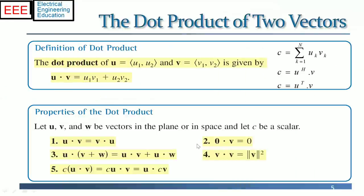The dot product of two vectors is the sum of the products of the corresponding elements of the two sequences. For two given vectors U and V having the same dimension, the dot product for complex numbers is the Hermitian transpose of vector U multiplied with the corresponding entries of V. The Hermitian operation is the complex conjugate transpose of U. For the real case it is only the transpose of vector U. The products are summed together to get the final scalar value.